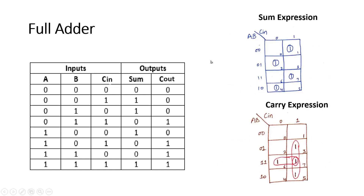Let me show you how we can derive it. I will derive the expression of sum and carry-out with the help of Karnaugh maps. This is the Karnaugh map for the sum expression and this is the Karnaugh map for the carry expression. On the left-hand side I'm using A, B, and C-in. As per the Karnaugh map principles, we need to write all the possible combinations of AB: 00, 01, 11, 10.